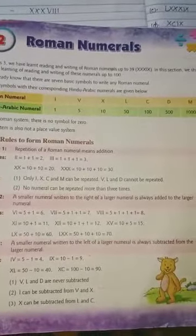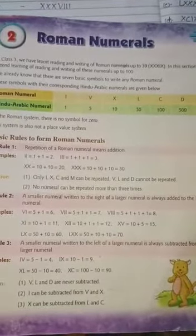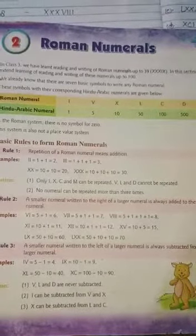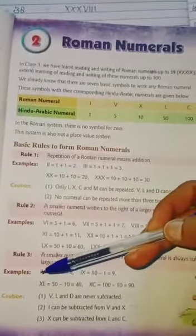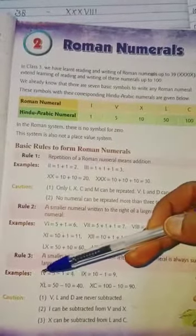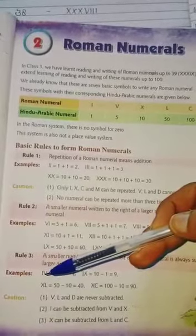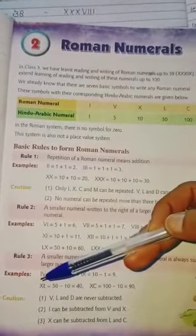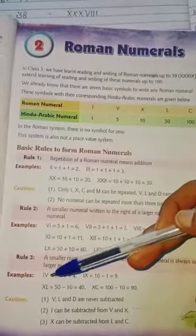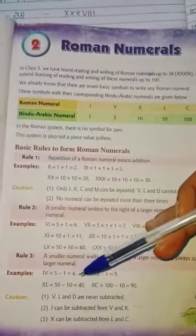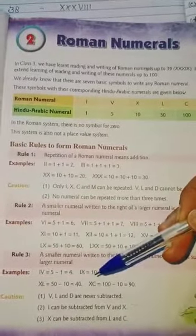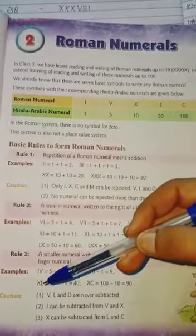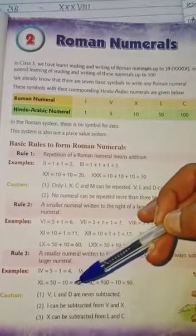Rule number 3: A smaller numeral written to the left of a larger numeral is always subtracted from the larger numeral. For example, in IV, I is the smaller numeral and V is the larger; since the smaller is on the left, we subtract: 5 minus 1 equals 4. IX means 10 minus 1 equals 9. XL means 50 minus 10 equals 40.